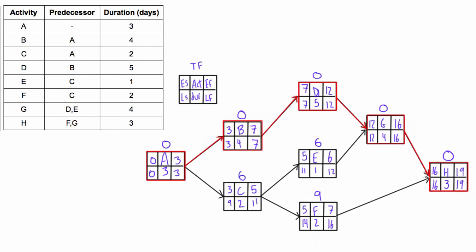Now the last thing to do is find the free float of each activity, and we'll write the free float beneath each node. The free float is the minimum early start of all successors of a given activity, minus the early start of the given activity, minus the given activity's duration. Also note that free float is always equal to or less than the total float — it can never be more. So right away, if you're on the critical path, you know the free float will definitely be 0 for all of those activities.